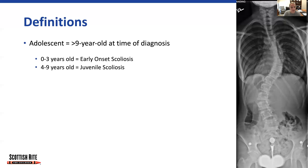Adolescent scoliosis is defined as being older than nine years old at the time of diagnosis. If the patient is between zero and three years old, we consider that early onset scoliosis. And if they're between four and nine years old, we consider that juvenile scoliosis.